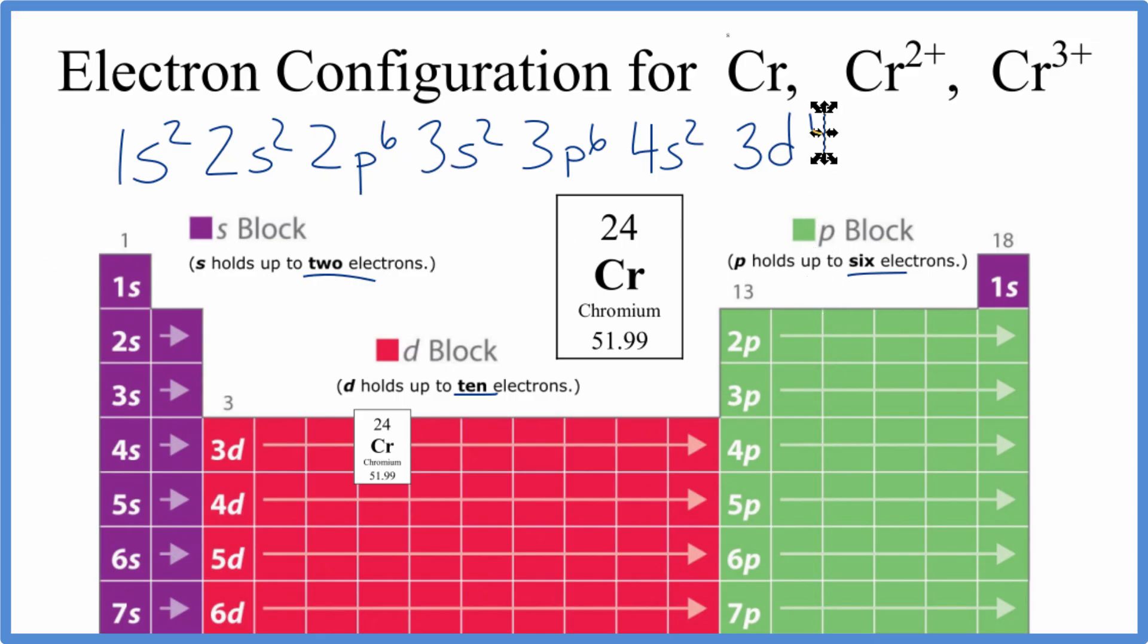One thing to note is when we have electron configurations, once we get up into these transition metals, the 4s is typically written after the 3d. And that's because the 4s is going to be the first ones removed when it forms ions. So here we have the electron configuration for chromium that you'd end up with if you followed the general rules.